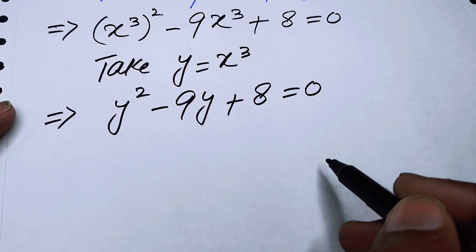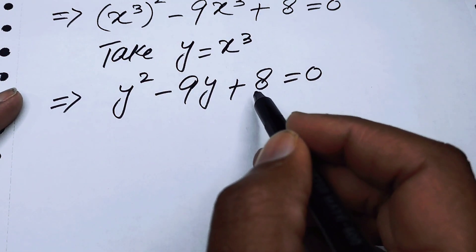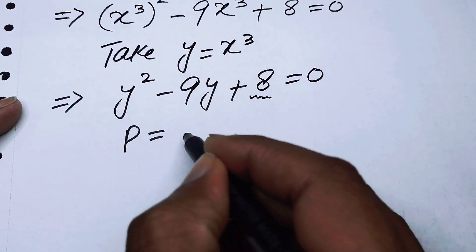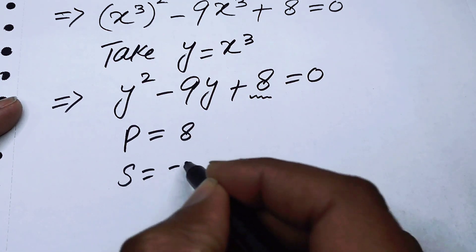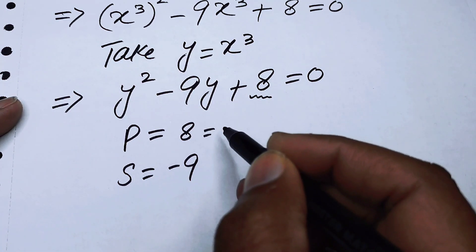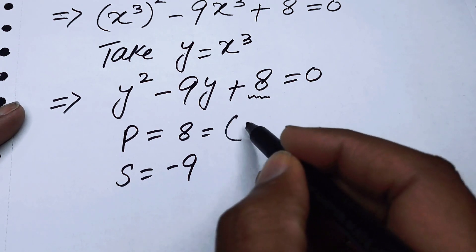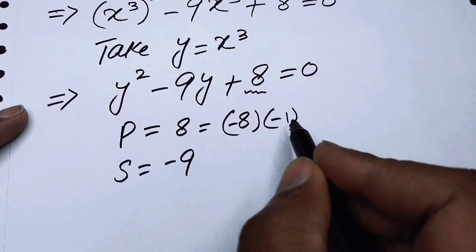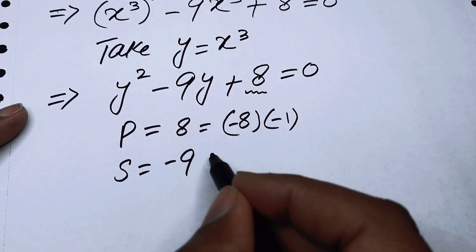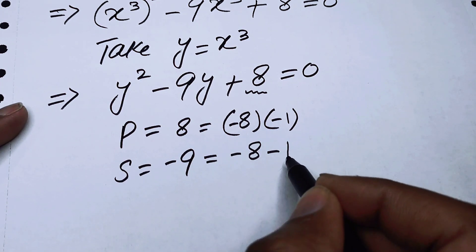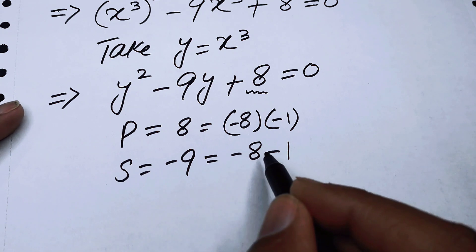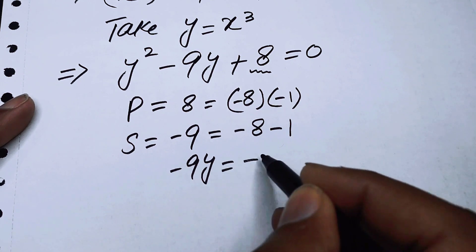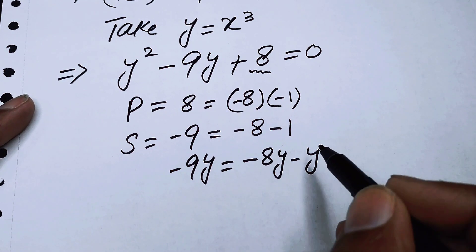Now we will factor this equation. We need two numbers whose product is 8 and whose sum is minus 9. These two numbers are minus 8 and minus 1, because when we multiply minus 8 by minus 1 we get plus 8, and when we add them we get minus 9. So we can write minus 9y as minus 8y minus y.